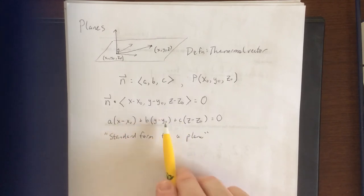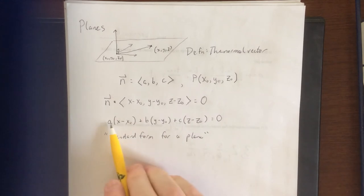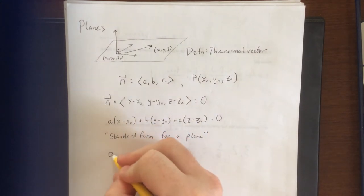And it immediately lets you know a point within the plane in the form of x naught, y naught, and z naught. Now, what is typical to do when it comes to these planes is to distribute the a, distribute the b, distribute the c, and then combine all of the like terms that you have.